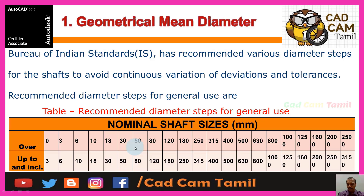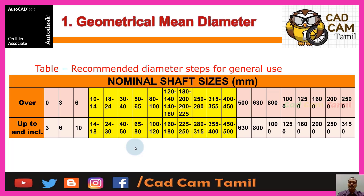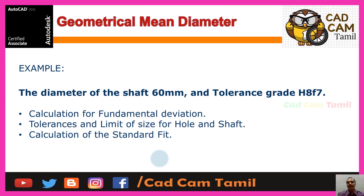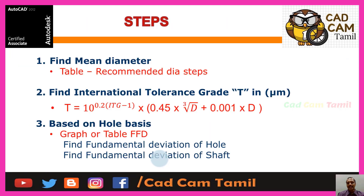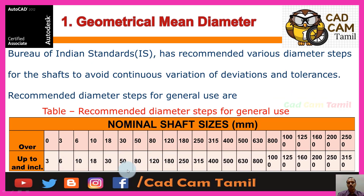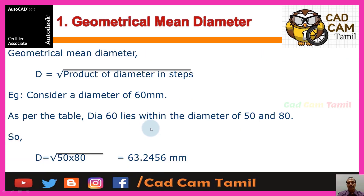In the table, we need to know: after 10 — 10 to 14, 14 to 18 — there are further subdivisions. The diameter of shaft is 60 mm, so 60 lies in the 50 to 80 range. First step: geometrical mean diameter. Since shaft diameter is 60, it lies between 50 to 80.